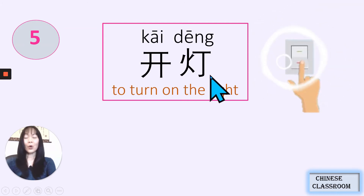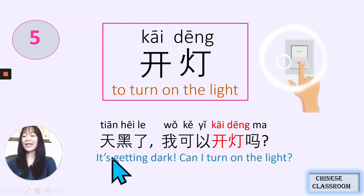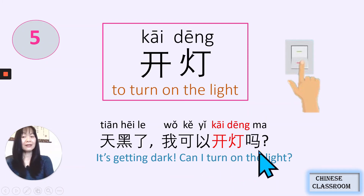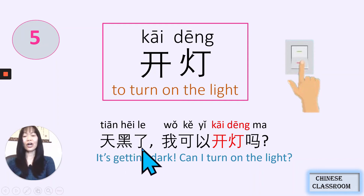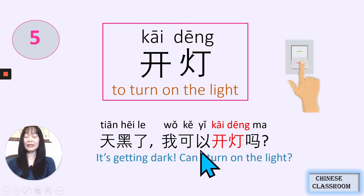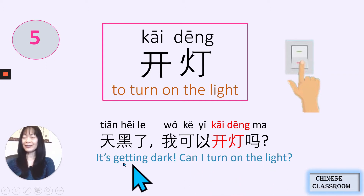The fifth one: 开灯, 开灯 — 灯 means light or lamp. 开灯 — turn on the light. 天黑了, 我可以开灯吗? 黑 — black, the color black, dark. 天黑了 — it's getting dark. 我可以开灯吗? 可以 — can. 我可以 — I can. 开灯吗? 吗 is a question. May I turn on the light? It's getting dark, can I turn on the light? 天黑了, 我可以开灯吗?